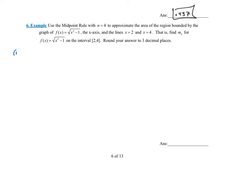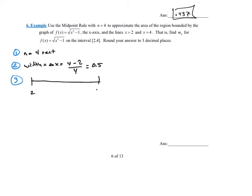Step one: number of rectangles — n equals 4. Step two: find the width. Delta x equals the right endpoint 4 minus the left endpoint 2, divided by 4, which is 2 over 4 — that's 1/2, or 0.5. Step three: draw the interval. Left endpoint is 2, right endpoint is 4, broken into 4 rectangles with 3 equal slices. Starting at 2, I add delta x each time: 2 plus 0.5 is 2.5, plus 0.5 is 3, plus 0.5 is 3.5, plus 0.5 is 4.